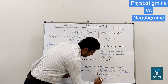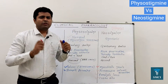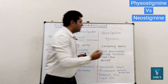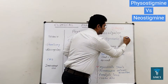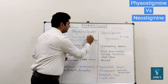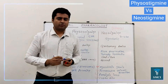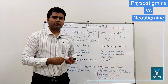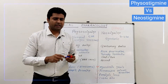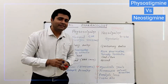Paralytic ileus as well as cobra bite — neostigmine is also used in these cases. Another difference to remember: if we give neostigmine systemically, its effect lasts around three to four hours. If we give physostigmine, its systemic effect is nearly around six hours. So we need to administer these drugs frequently because their duration of systemic action is relatively short.